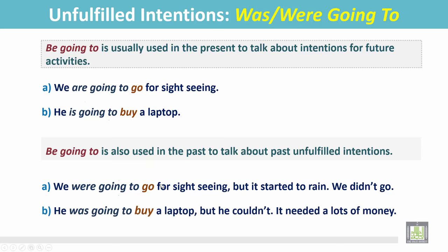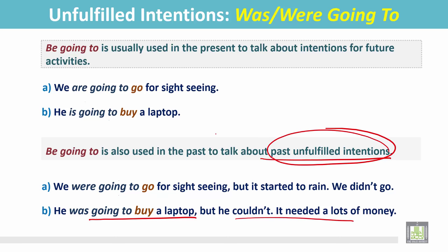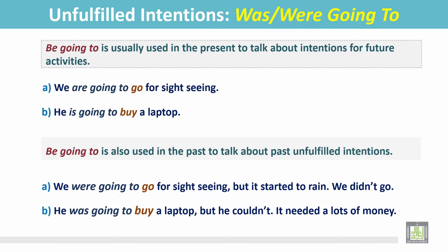Go. Another example: 'He was going to buy a laptop, but he couldn't — it needed a lot of money.' His plan was to buy a laptop. It was his past intention, but he could not buy it since he did not have enough money. So it was an unfulfilled intention in the past. After 'going to,' the verb is in the present simple form — buy.